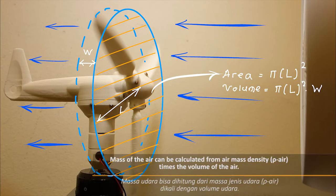Mass of the air can be calculated from air mass density, rho air, times the volume of the air.